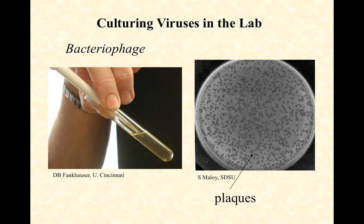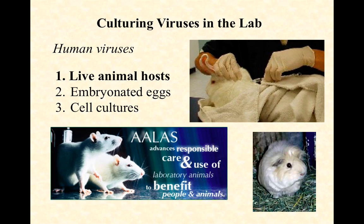Phage are the simplest viruses to culture, but if we want to culture viruses that infect humans, we have to get a bit more savvy. Viruses that infect humans aren't going to grow on an E. coli, Salmonella, or Staph culture — we actually need animal tissues. Many viruses that infect you and me won't be able to infect many different animals either, so there are limitations. But if it's a virus that will replicate inside a laboratory animal like a guinea pig, rat, or rabbit, we can grow up those viruses within those animals for study and for producing vaccines.